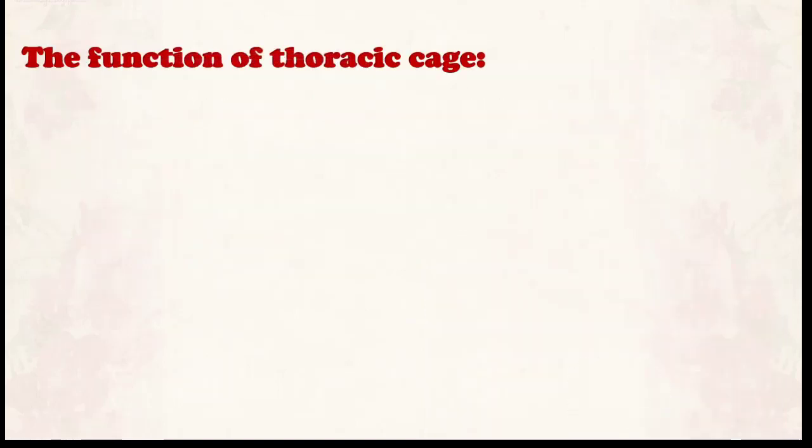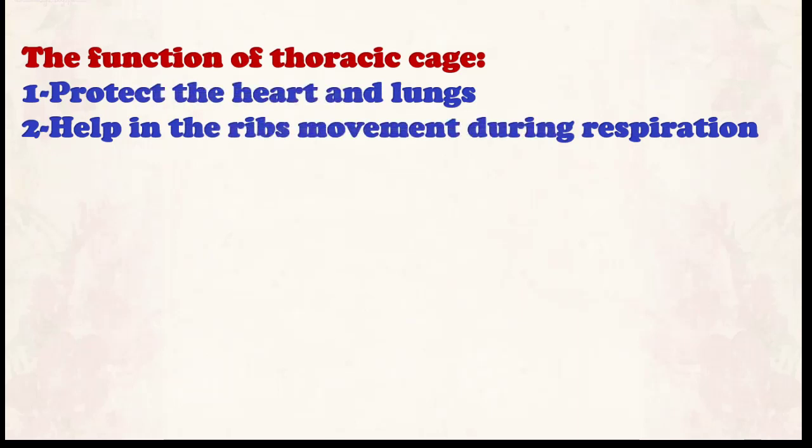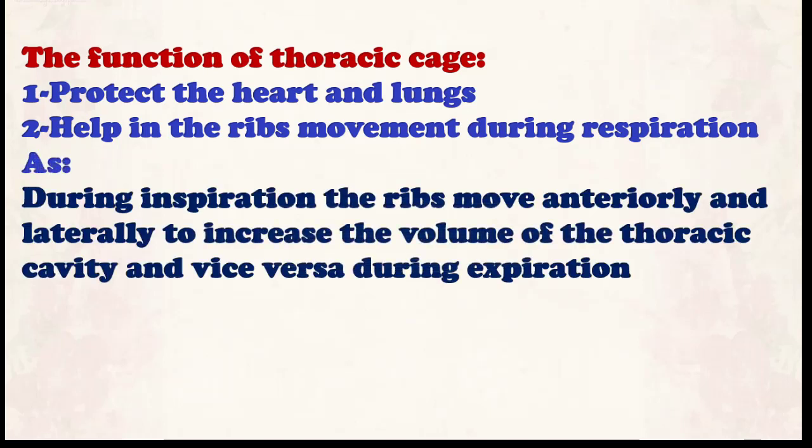The functions of the thoracic cage: number one, to protect the heart and lungs. Number two, to help the rib movement during respiration. During inspiration or inhalation, the ribs move anteriorly, upward, and laterally to increase the volume of the chest cavity, so air enters the lungs. During expiration or exhalation, the ribs move posteriorly and downward to decrease the volume of the thoracic cavity and the air comes out from the lungs.